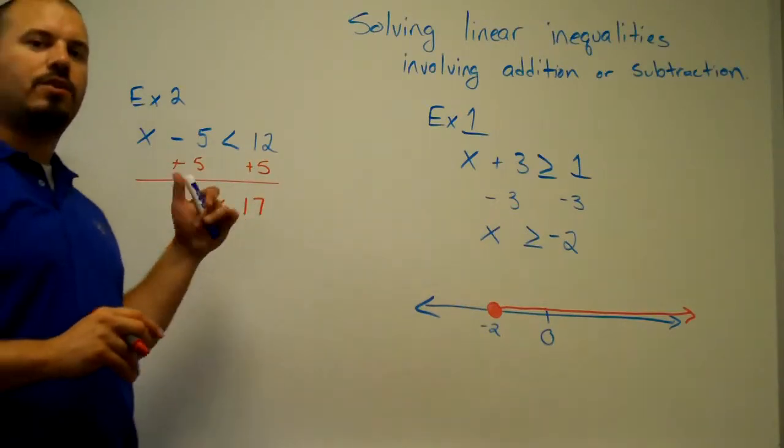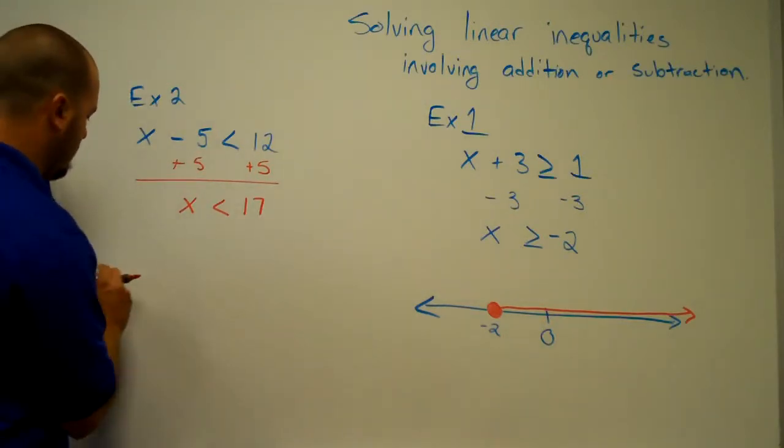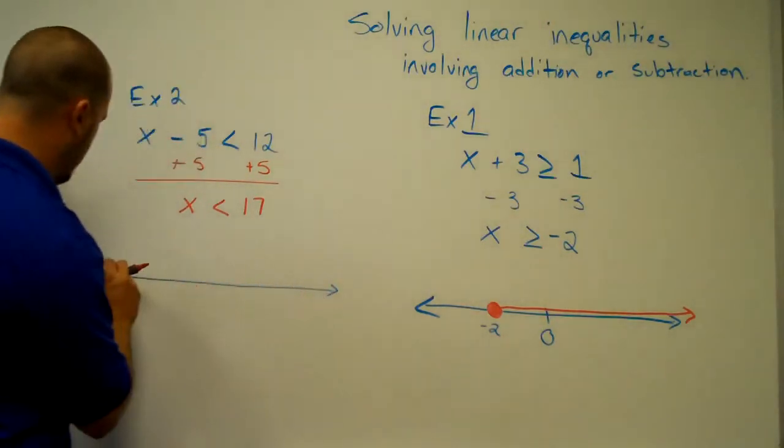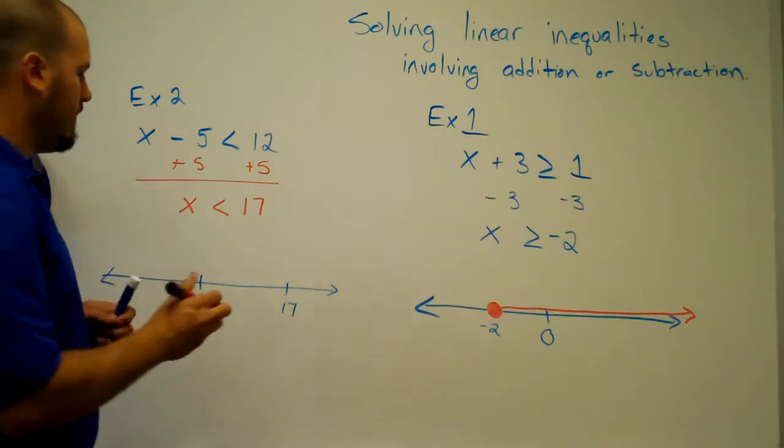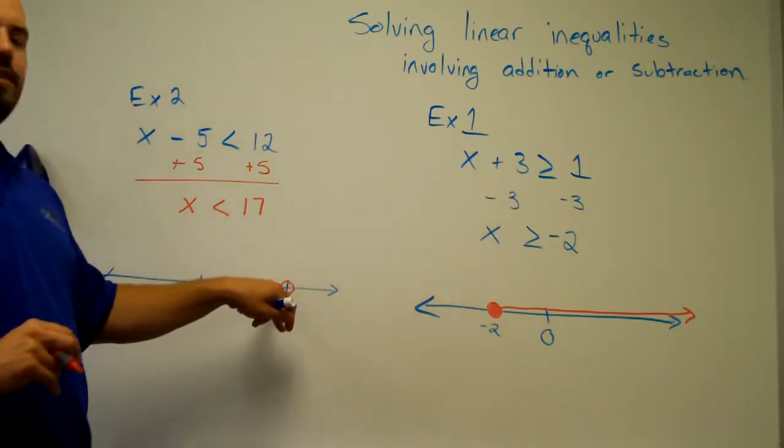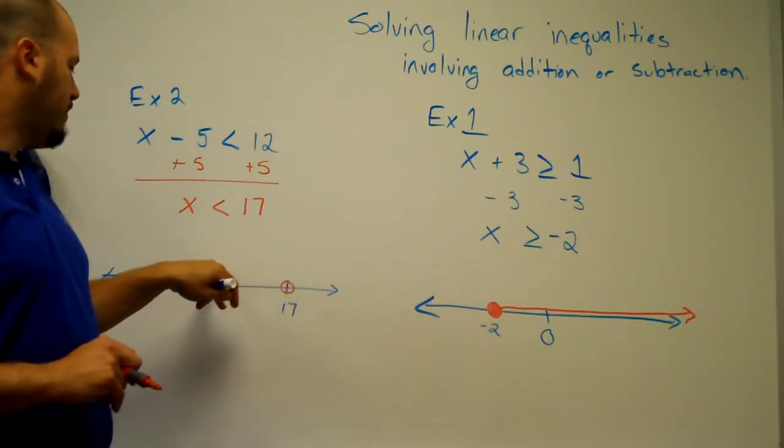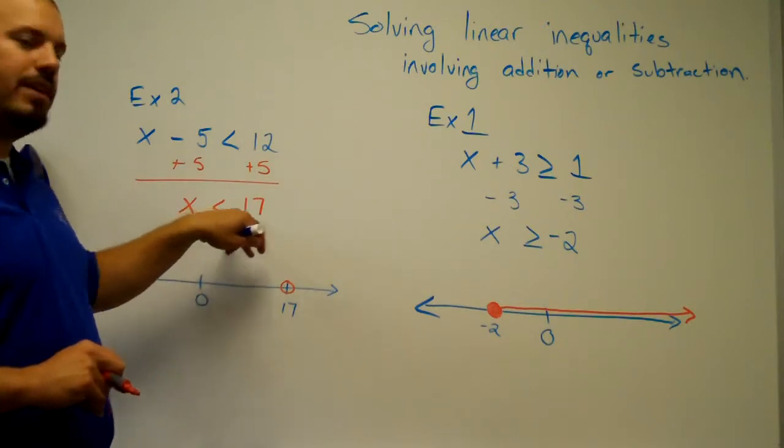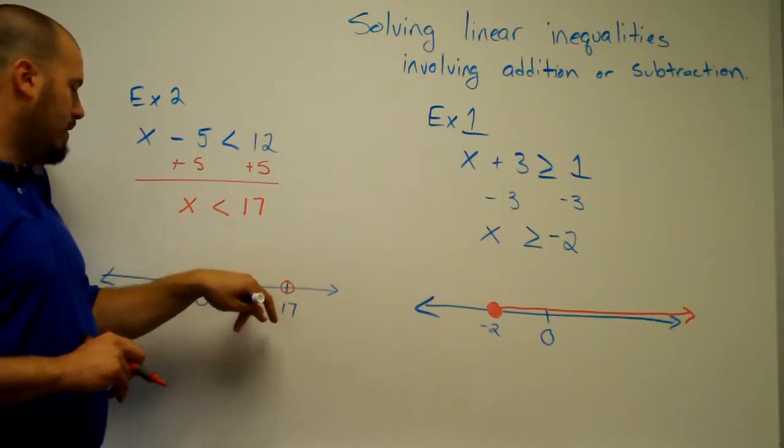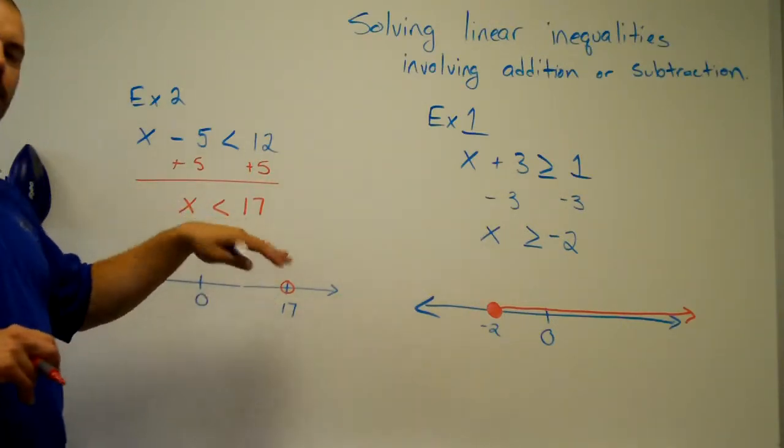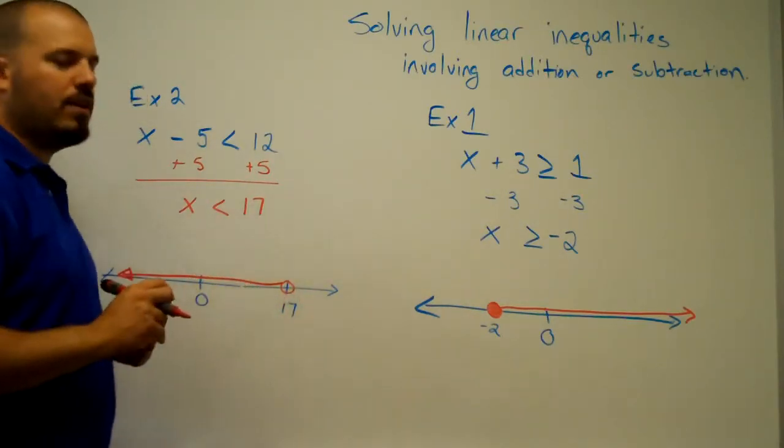So, our solutions for x are all the values that are less than 17. And we graph this on a number line. So, 17, I'm marking with that circle, and then I need to choose the points that are less than 17. If I were to choose the point 0, 0 is less than 17, so I'm shading towards that 0. 0 is a solution. About here would maybe be about 10. 10 is less than 17. It's a solution. So, we're shading all of these values that are less than 17.